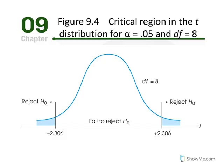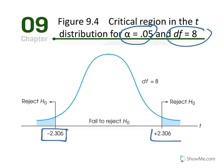Figure 9.4 illustrates what we just did. Given alpha equal to 0.05 and degrees of freedom equal to eight, we identified the critical t-values for this hypothesis test. If our t-statistic falls in the critical region, we reject the null. If it does not, we fail to reject the null — meaning there is no treatment effect or no difference between the conditions being tested.